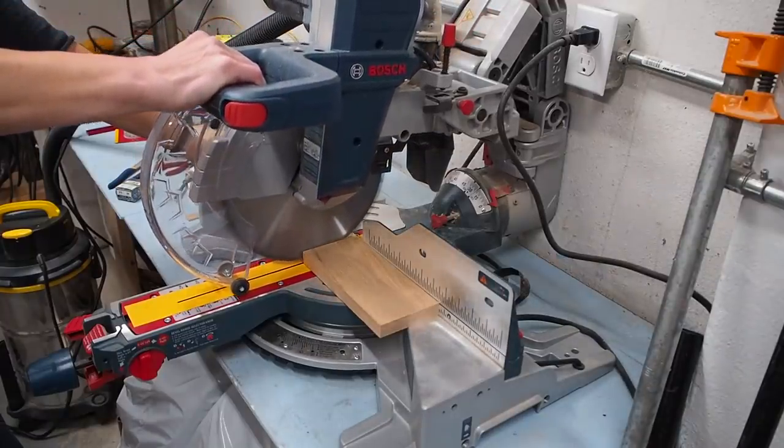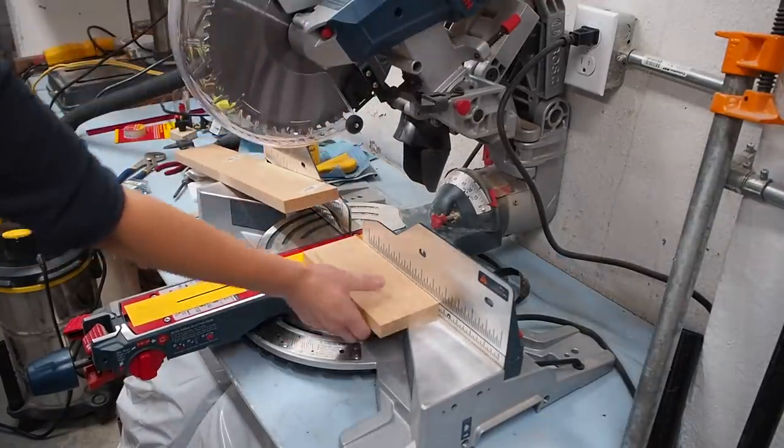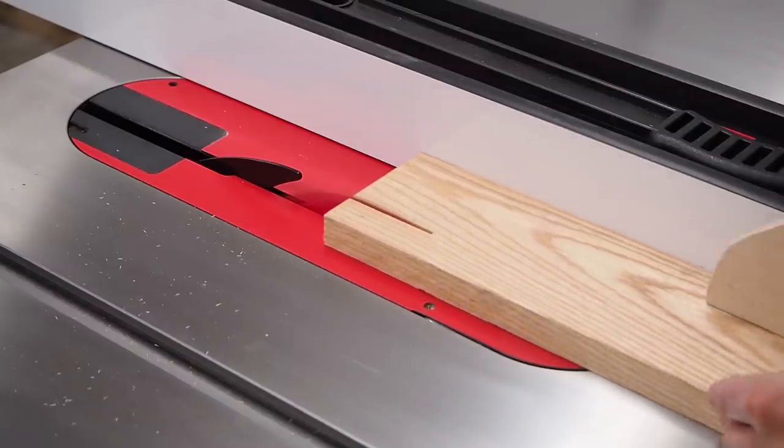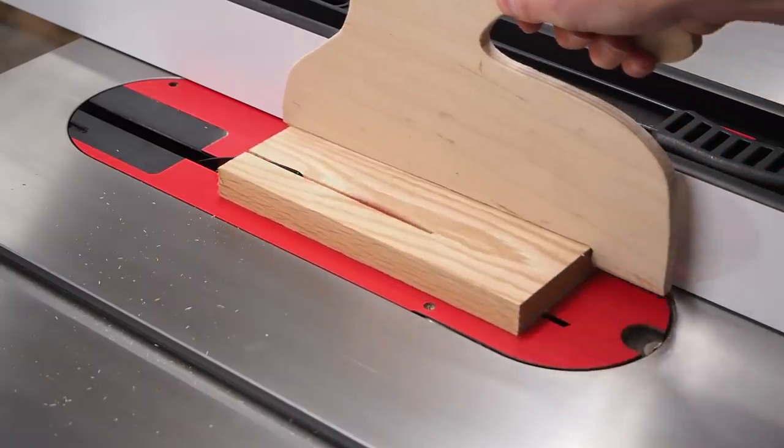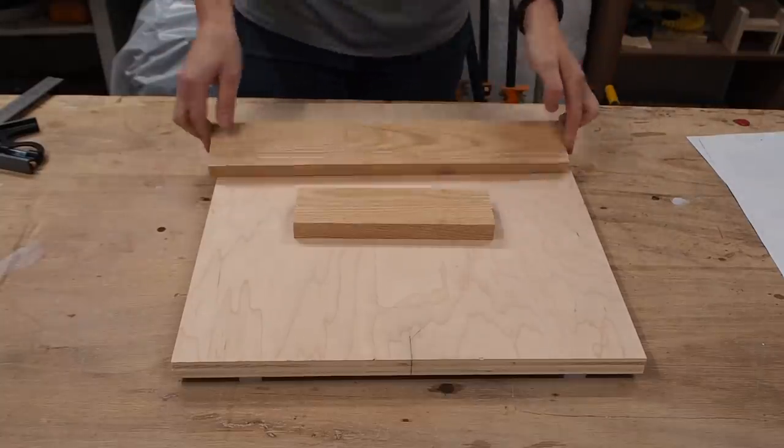Next I moved on to making the front and back bridges. The plans I used call for hardwood but I think plywood would do just fine. You'll need a full length bridge in the front while a shorter one can be used at the back.